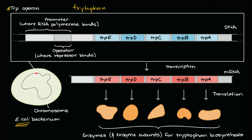The promoter is where the RNA polymerase binds and would start the transcription process. The operator is where repressor binds. And this is going to be essential for understanding how the trp operon works.